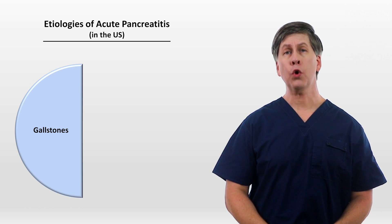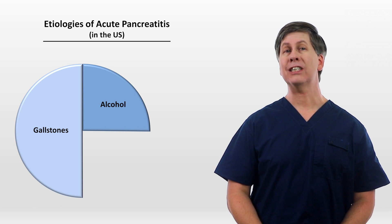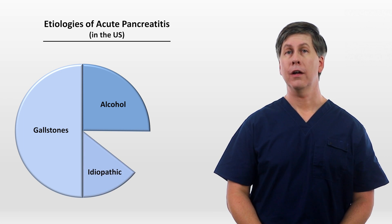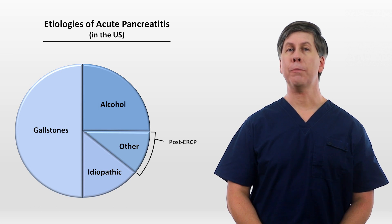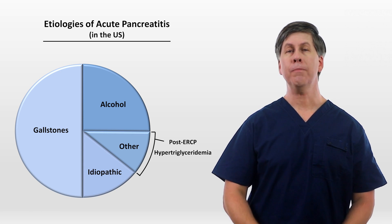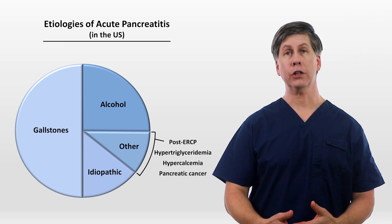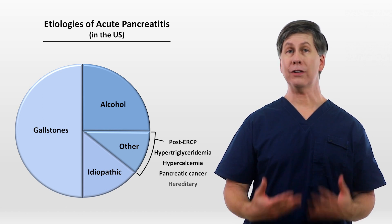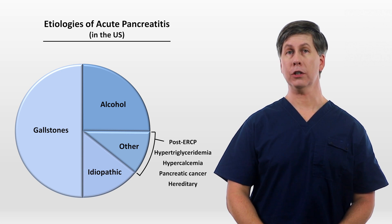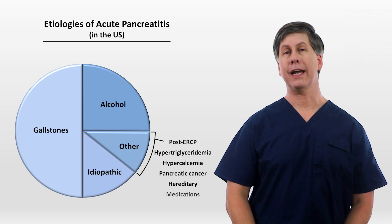About one-quarter of cases are due to alcohol. Of the remaining quarter, a significant number are idiopathic, and the remaining cases include ERCP, hypertriglyceridemia, hypercalcemia, pancreatic cancer — particularly in those patients over the age of 50 — hereditary predispositions to pancreatitis, particularly in those under the age of 35, and very rarely medications.